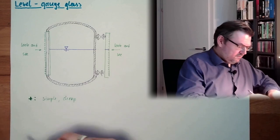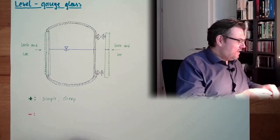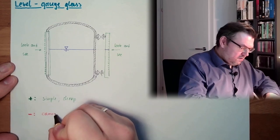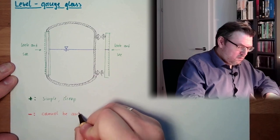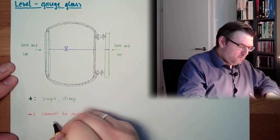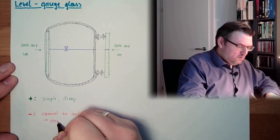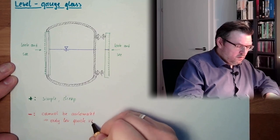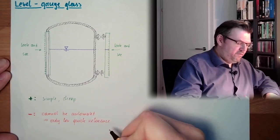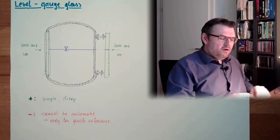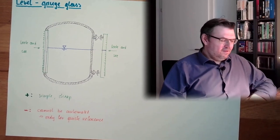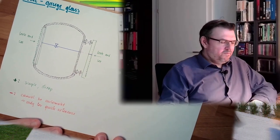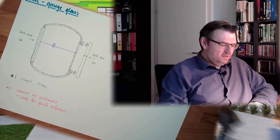Negative side, cannot be automated. Only for a quick reference, alright? So there is no way of automating the look with a camera, or what? What do you need? We need a relatively clear liquid, and it cannot be automated.